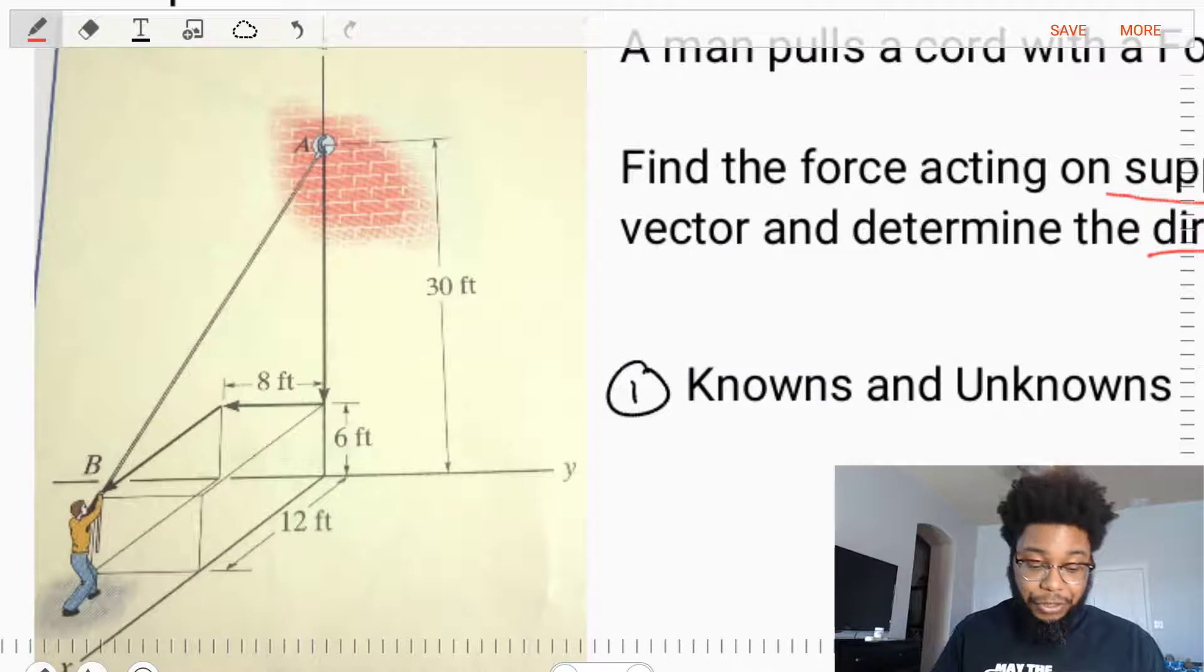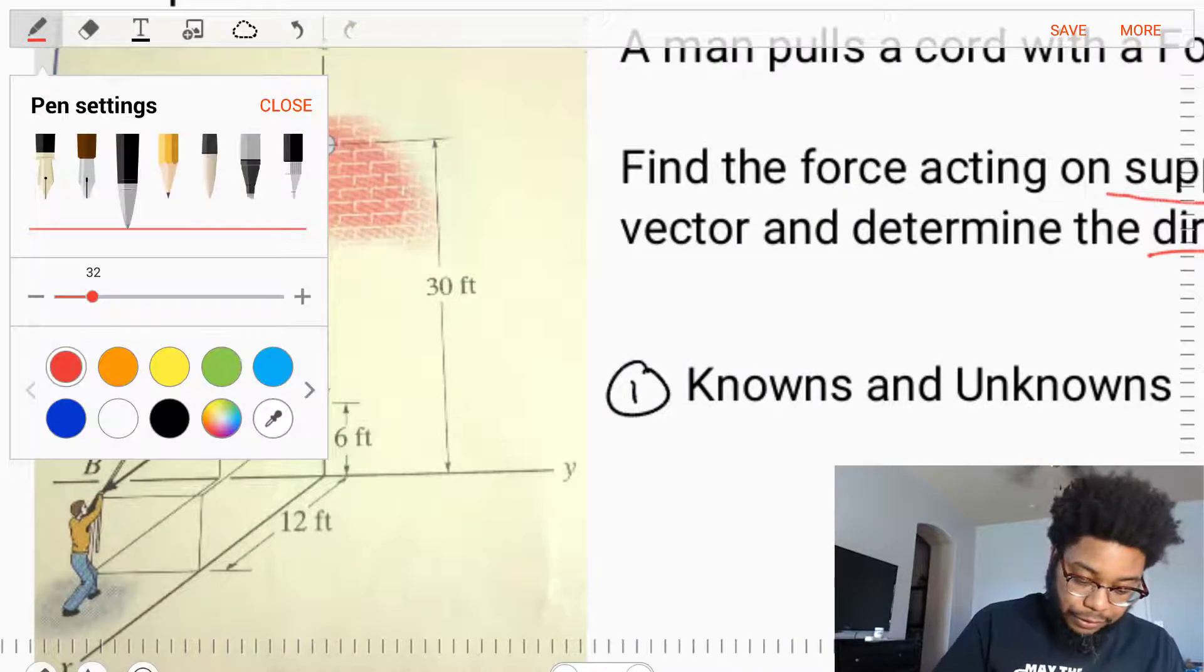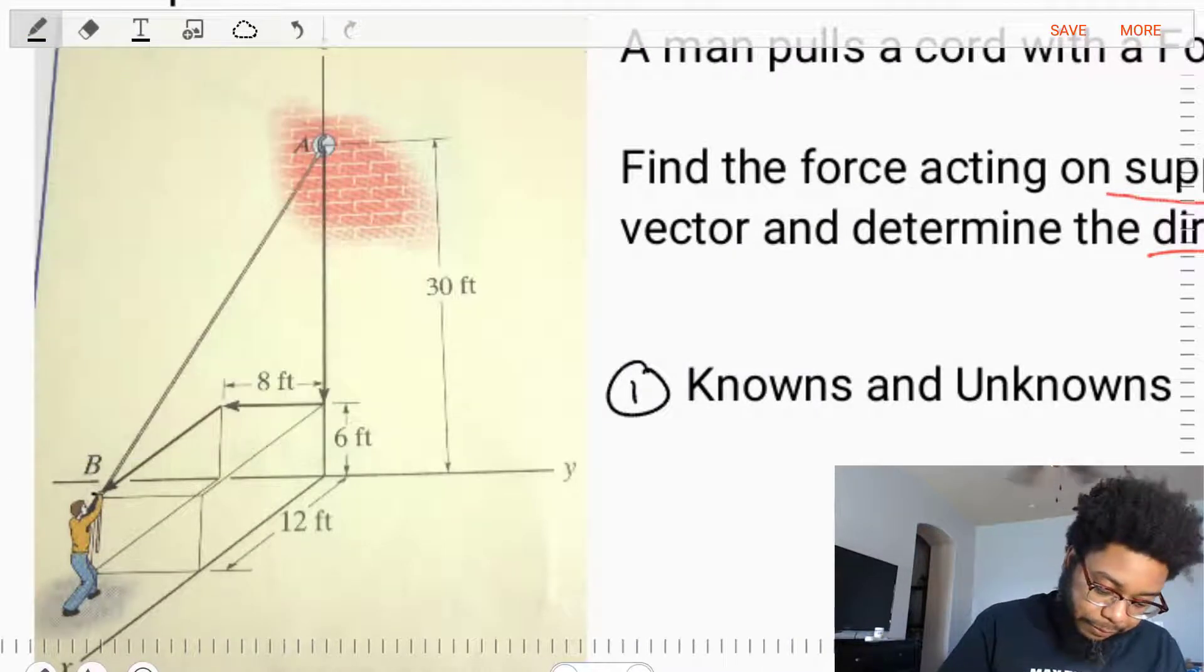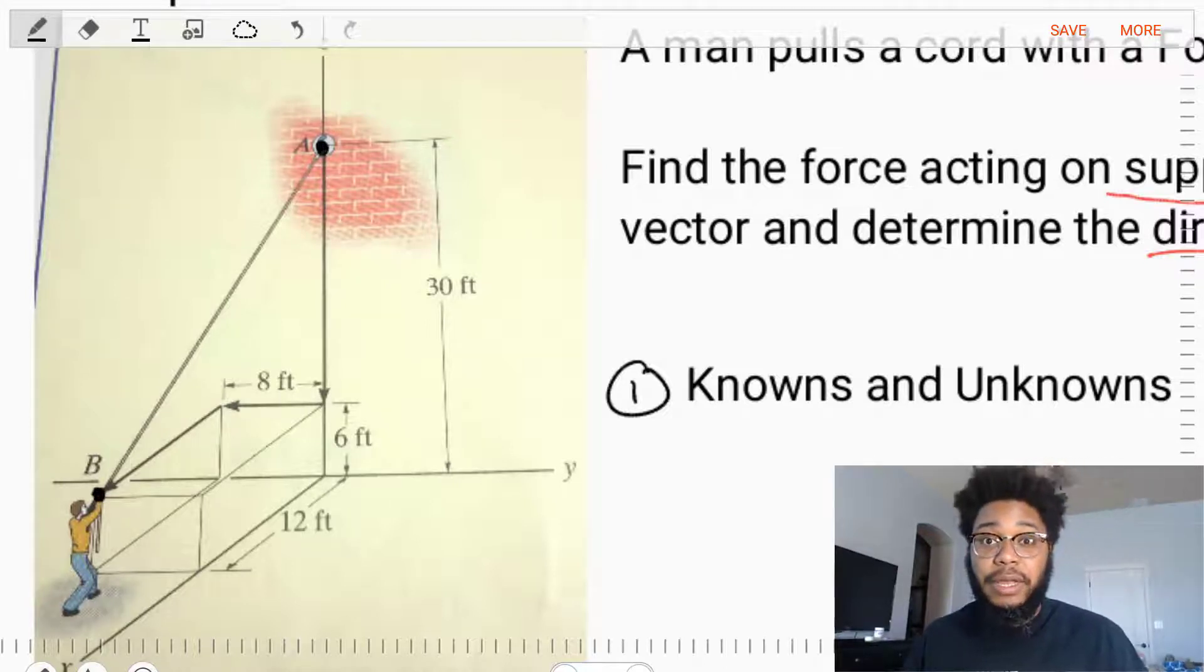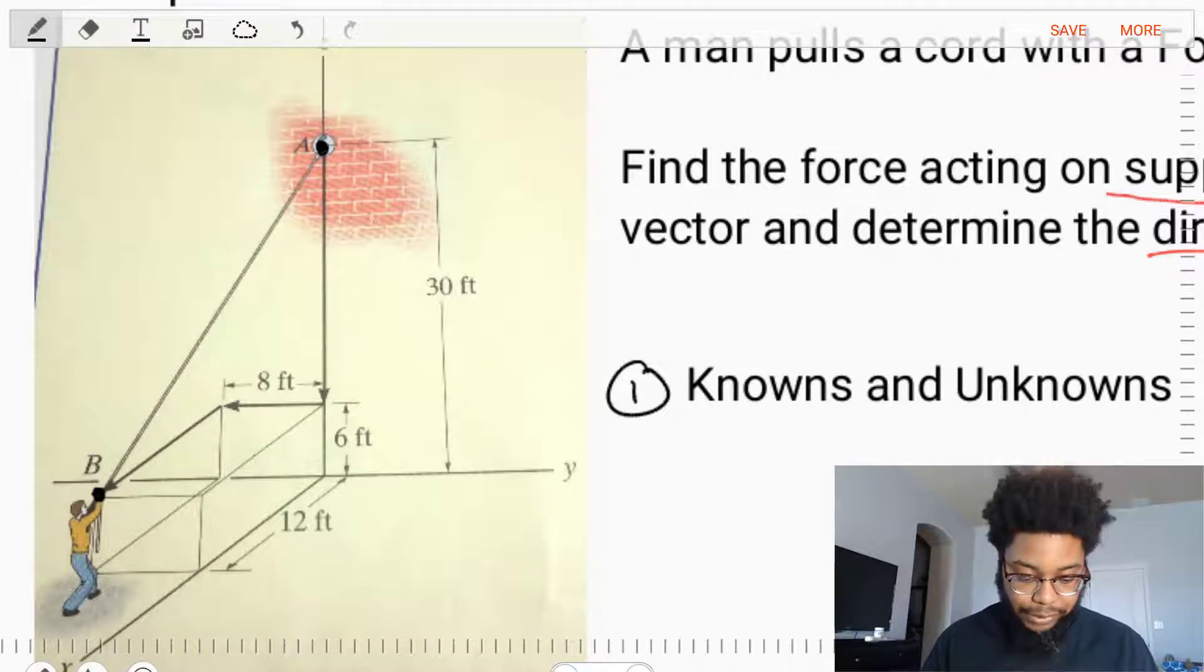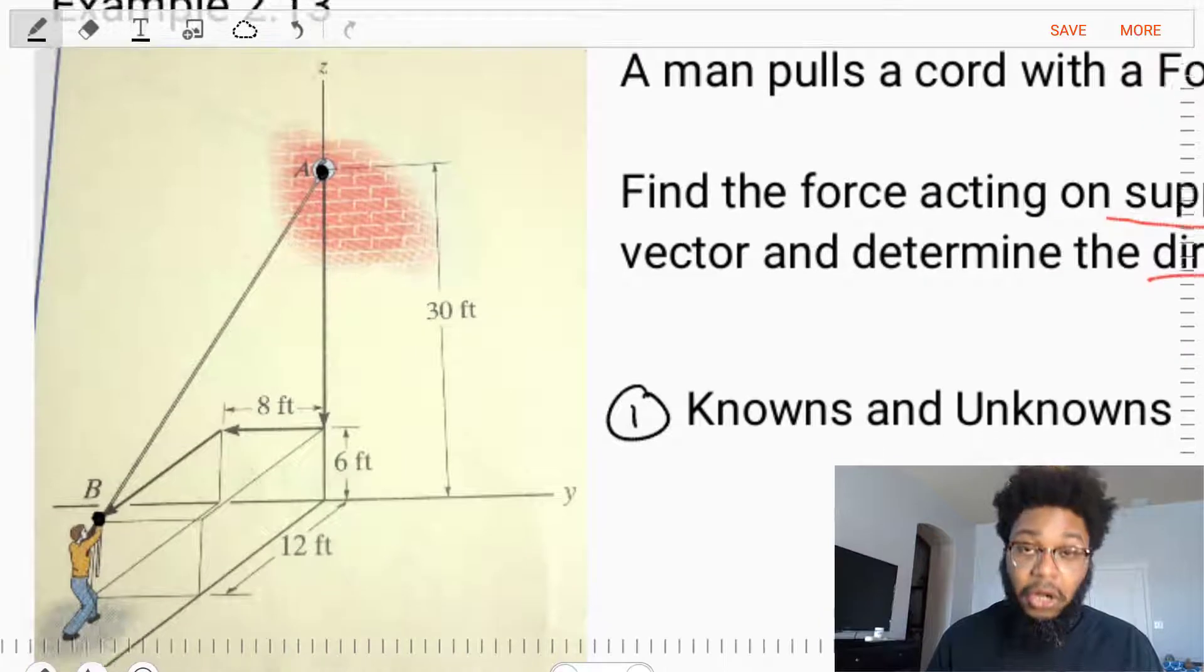In our diagram, we see we have a 3D problem. We see that there is a man at point B and he's pulling on a cord that is connected at point A. And we need to find the force acting on support A.